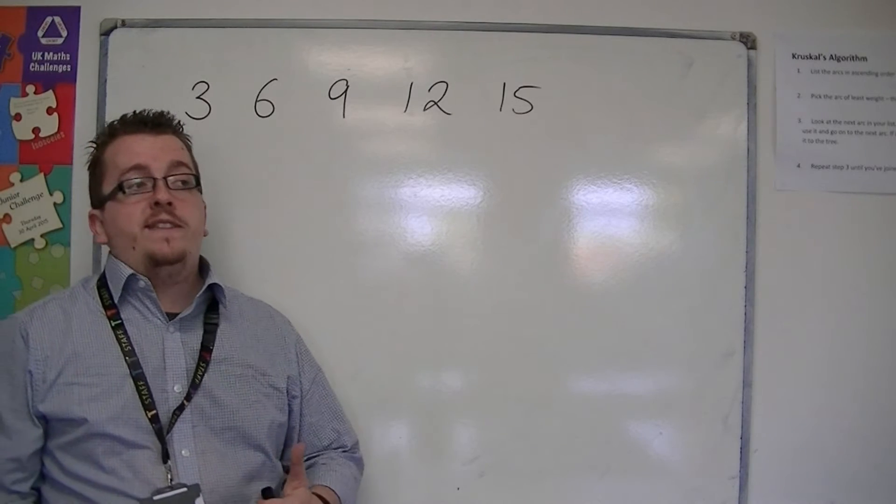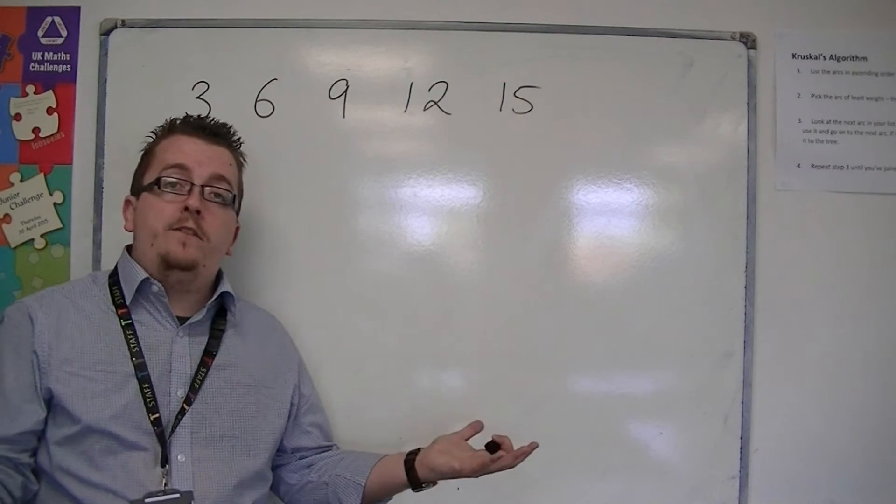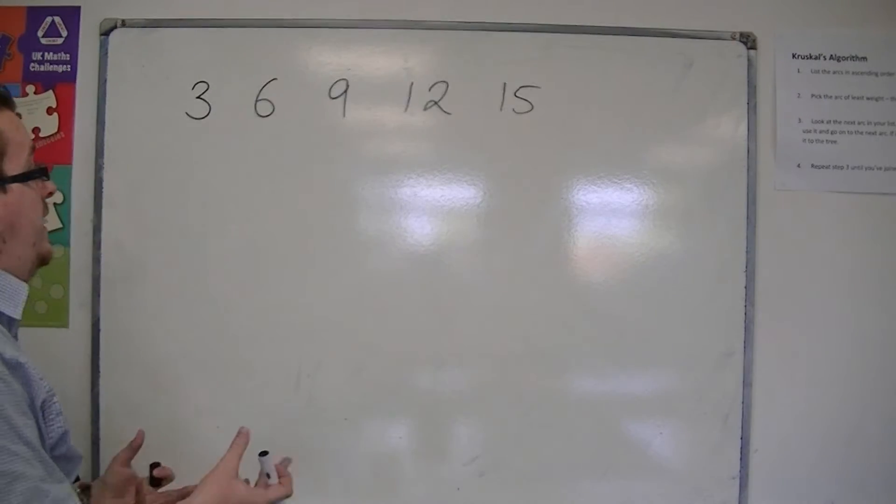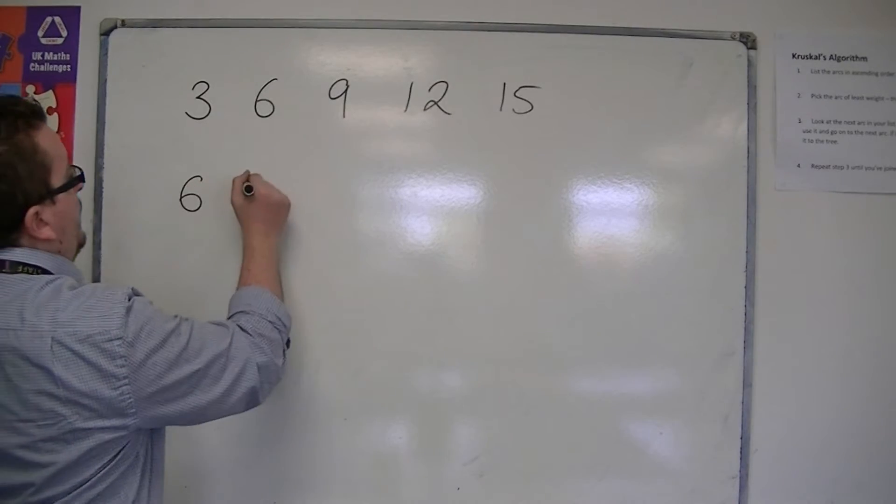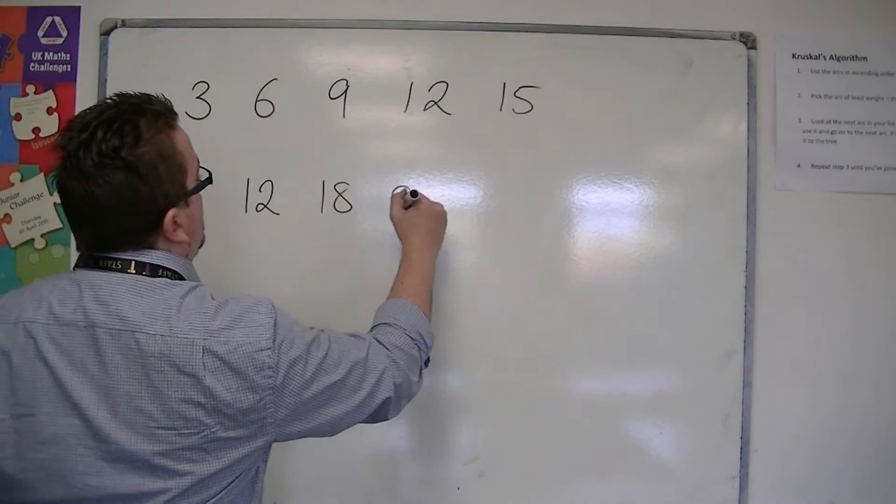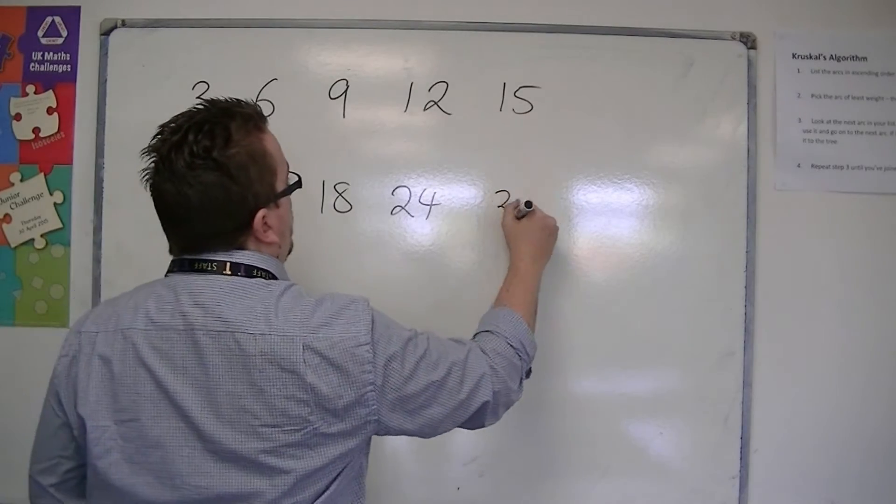And if I wanted to write down the first five multiples of six, then we would have six, twelve, eighteen, twenty-four, thirty.